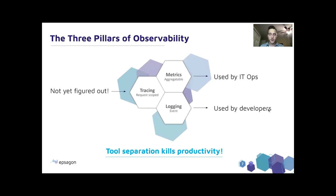I'm sure we've all heard of the three pillars of observability. These are also more commonly referred to as MELT: metrics, events, logs, and traces. Metrics are a great way for ops to figure out if something has gone wrong — maybe latency has increased above a certain threshold, or error saturation has increased beyond a given percentage.